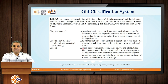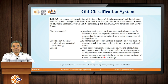The third terminology was biologic, defined as a virus, therapeutic serum, toxin, vaccine, blood product, etc., which are derivatives or isolated from different types of substances like blood. So there is no genetic manipulation in place. This was the old classification system.